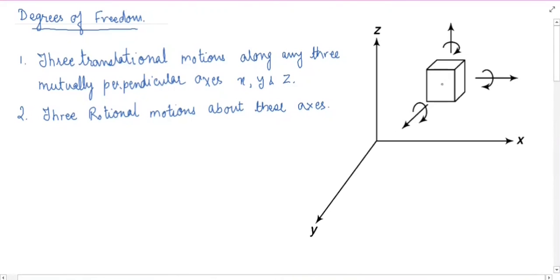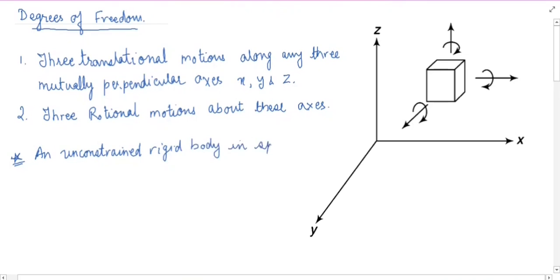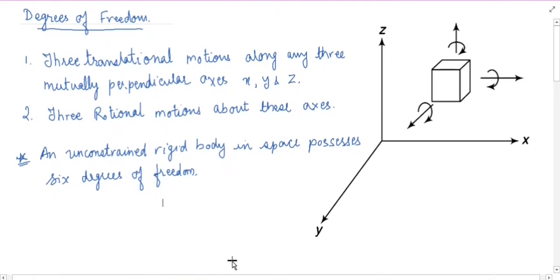It can move in the x direction, it can move in the y direction, it can also move in the z direction. Similarly, this body is free to rotate about the x axis, it can also rotate about the y axis, and similarly it is free to rotate about the z axis. Thus, an unconstrained rigid body in space possesses six degrees of freedom. In short, we can say that the degrees of freedom of a body can be defined as the number of independent motions that the body can have — it may be translational or rotational.